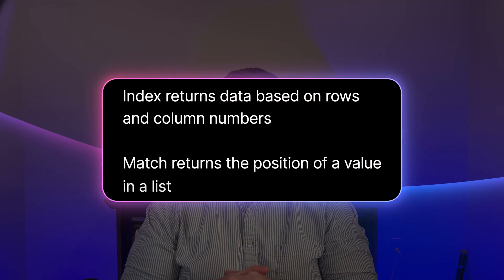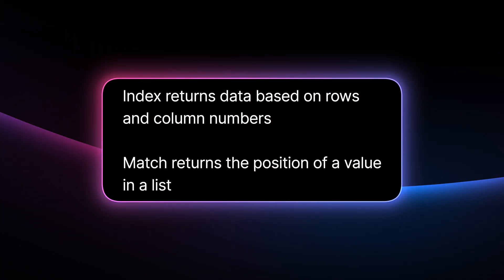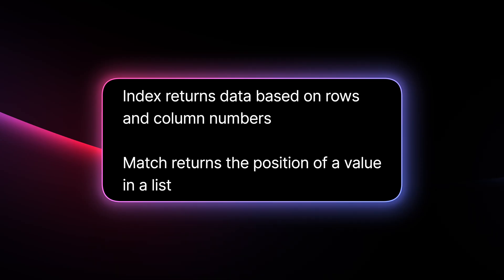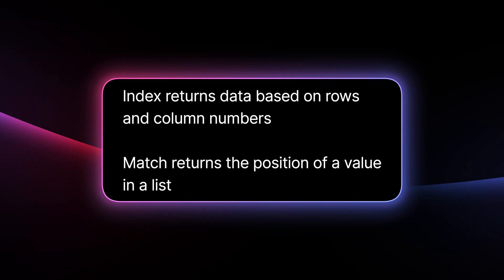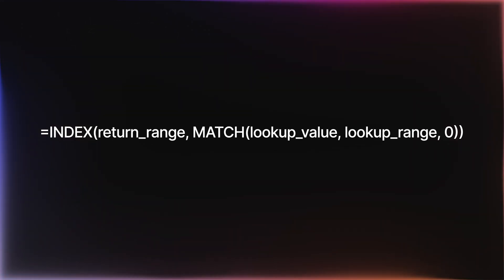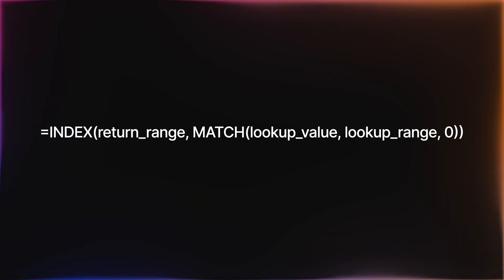Let's break this combo down. INDEX returns a value from a table based on the row and column numbers — think of it like coordinates. Row three, column two, Excel grabs that exact cell. MATCH tells you the position of a value in a list; if banana is the second item, MATCH returns two. When you combine them, you unlock a super flexible lookup. The basic structure is: INDEX is our return range, and MATCH is our lookup value with our lookup range, and zero returns an exact match. Translation: return this value from the column where this row matches my search.